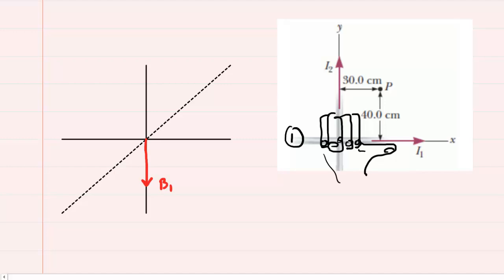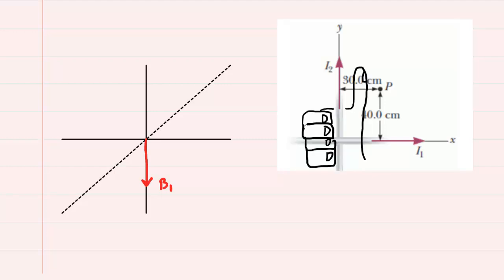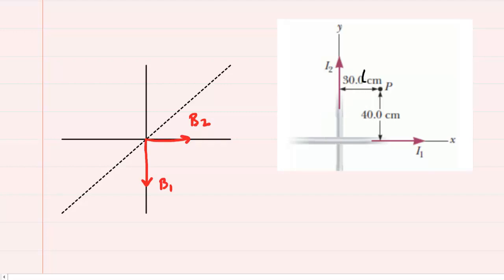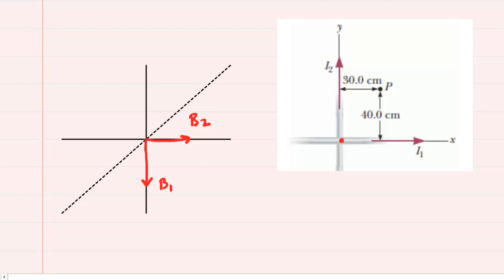Now grasping wire number 2 with our right hand, our thumb is pointing in the direction of the current — upward. At the point of intersection, our fingers are curling to the right, so B2, the magnetic field produced by wire number 2, will be pointing to the right. We've figured out the directions, and remember we're 30 centimeters above the point of intersection. The distance for each wire — wire number 1 and wire number 2 — will be 30 centimeters. So R1 equals R2 equals 30 times 10 to the minus 2 meters.